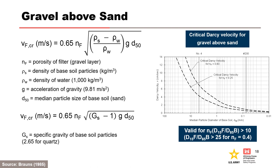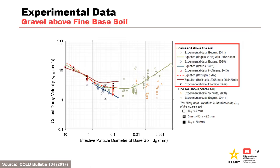Guidot et al. in 2010 measured critical Darcy velocities for gravel above sands, silts, and sand-clay mixtures. Experimental results for the critical Darcy velocity range from 1 to 10 centimeters per second, with the minimum of 1 centimeter per second corresponding to a particle diameter of 0.1 millimeters. This figure was edited from the original by reversing the order of the x-axis and using centimeters per second instead of meters per second for the y-axis.